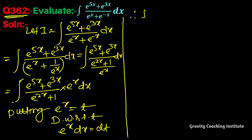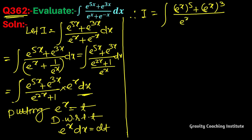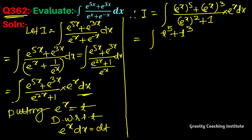Therefore I equals integration of [(e^x)^5 + (e^x)^3] / [(e^x)^2 + 1] into e^x dx. Substituting t for e^x: (t^5 + t^3) / (t^2 + 1) dt.